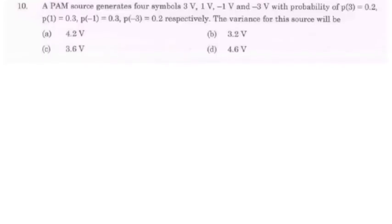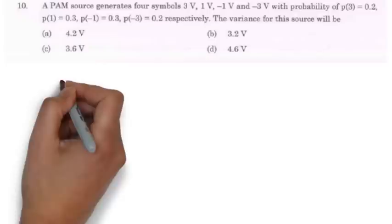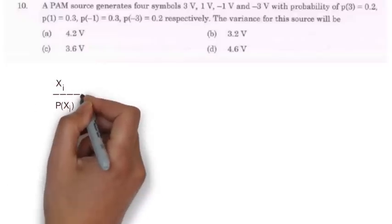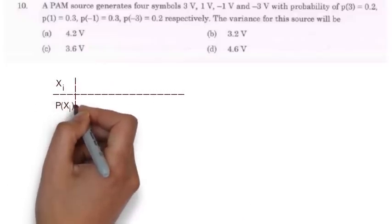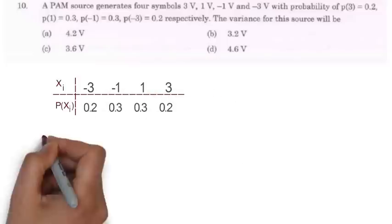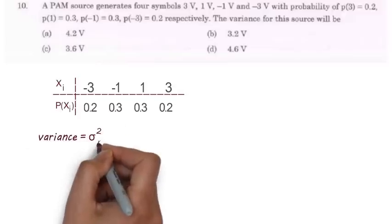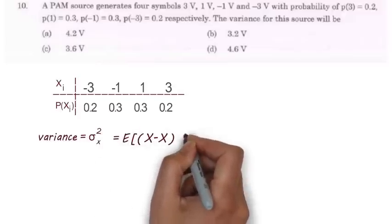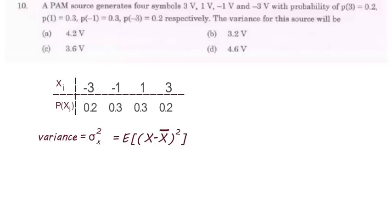In question number 10 they have given a PAM source generates 4 symbols and their respective probabilities are also given and they are asking what will be the variance for this source. So at first let's make a probability table. Now as we know the variance is equal to the expectation of x minus x bar whole square. Here x bar is the mean value of the variable. So let's calculate mean first.